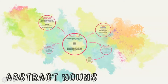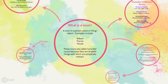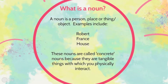So first of all, let's start with what is a noun. I'm sure that most of you will know that a noun is a person, place, or thing/object. Examples include Robert — that's the name of a person — France, the name of a country, and house, which is obviously the name of an object.